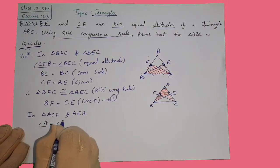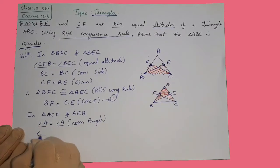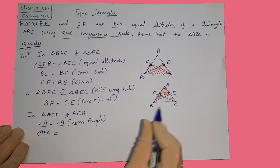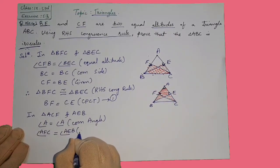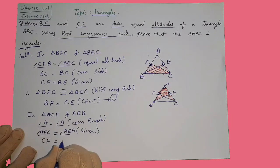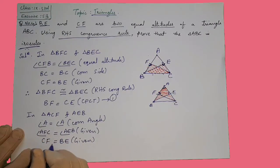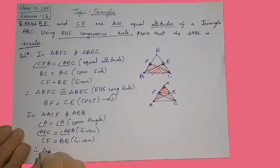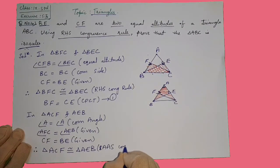Writing the proof: angle A equals angle A, as the common angle. Angle AFC equals angle AEB, because they are altitudes — both are 90 degrees. CF equals BE, which is also given. So two angles and one side give us the AAS congruence rule. Therefore, triangle ACF is congruent to triangle AEB by AAS congruence rule.